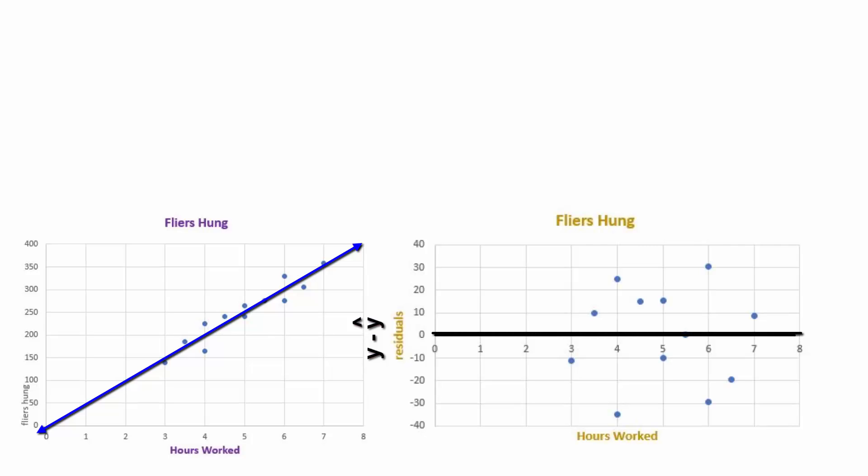That horizontal line that's at Y equals 0, that's the X axis. Any residual on that line is a residual of 0, implying that on the scatter plot it sits right smack dab on the prediction line because the observed Y had to equal the predicted Y in order for the residual to be 0.